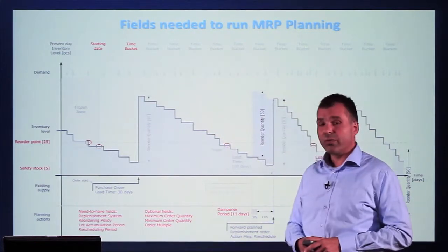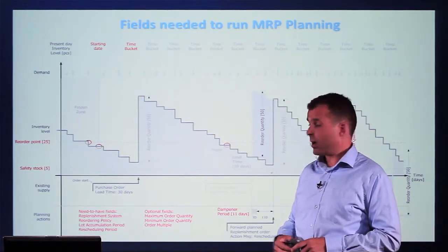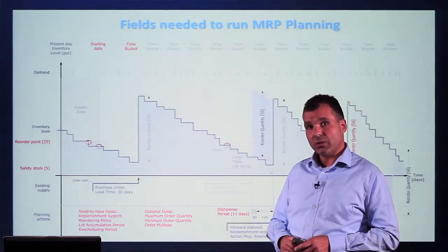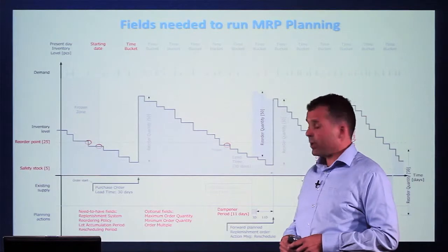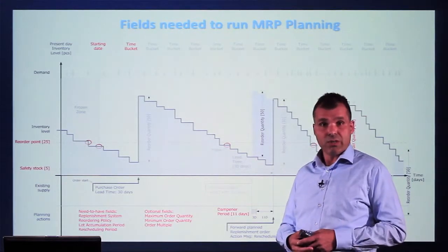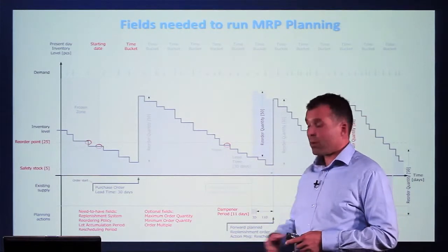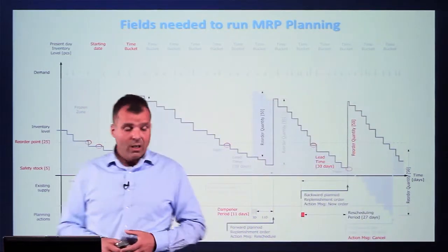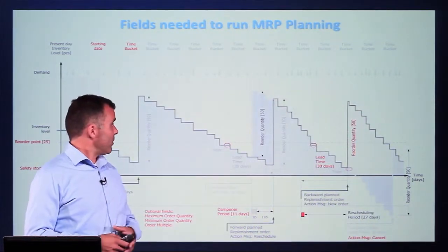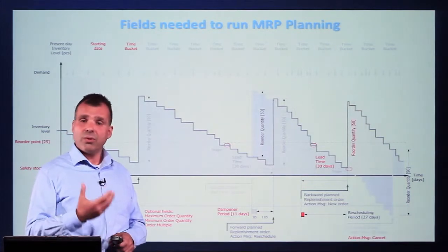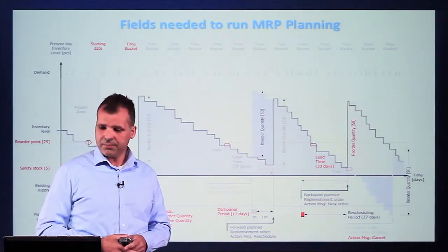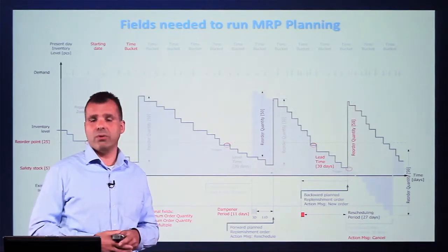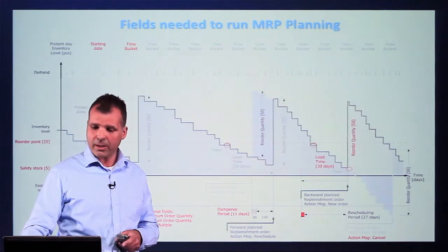Some of the required fields are mandatory — the replenishment system, the reorder policy, the lot accumulation period if you run lot-for-lot, and the rescheduling period. Some are optional, such as order modifiers, lead times, and reorder quantity. All these fields have to be set up in NAV if you run MRP. So MRP is very complex — it's very powerful when it works, but very complex to get up and running.